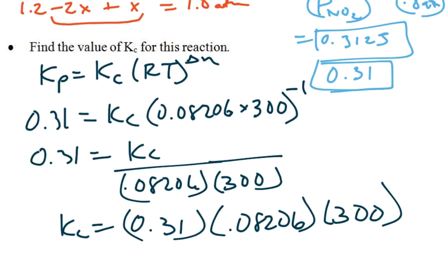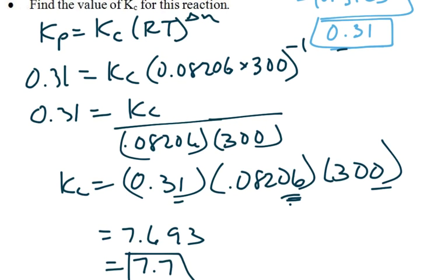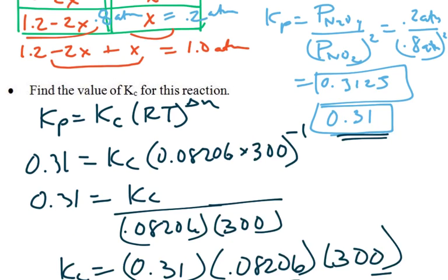And I'm just going to trust that all my units have canceled out, because this is liter atmospheres per mole Kelvin, and this has got some atmospheres, and that's Kelvin. So I'm going to get out, my answer, Kc's don't have units anyway. And the answer I get for this is 7.693, which I'm going to round off to two significant figures, call it 7.7, that's my Kc. So my Kc is 7.7, my Kp is 0.31, and that's how we go back and forth between Kp's and Kc's.